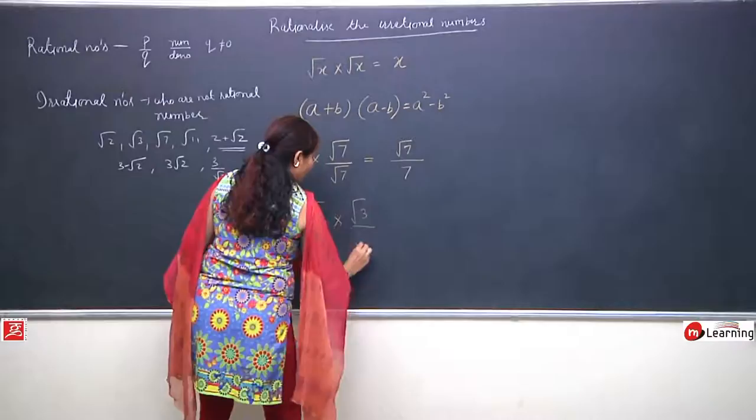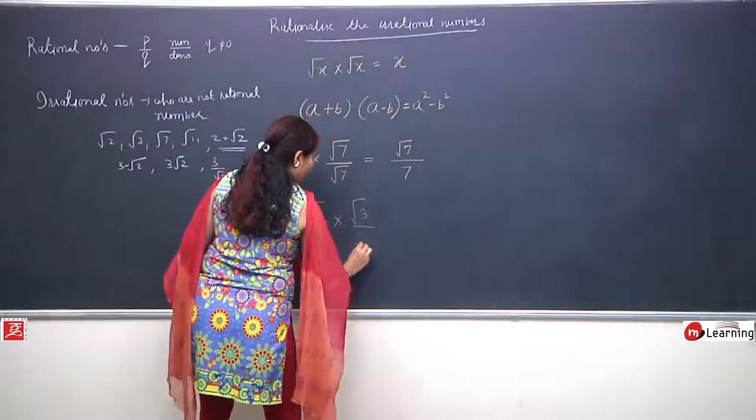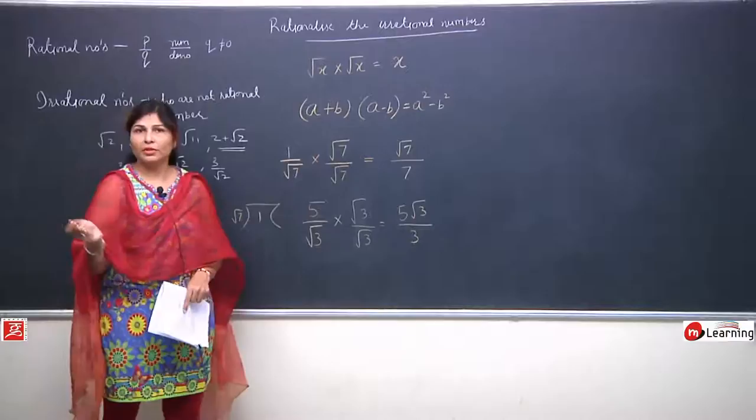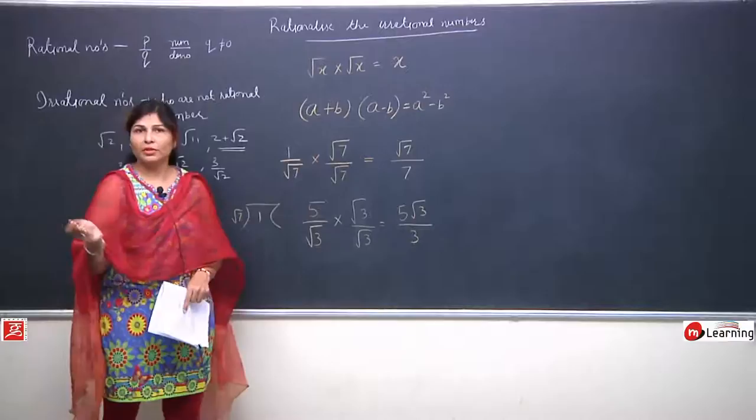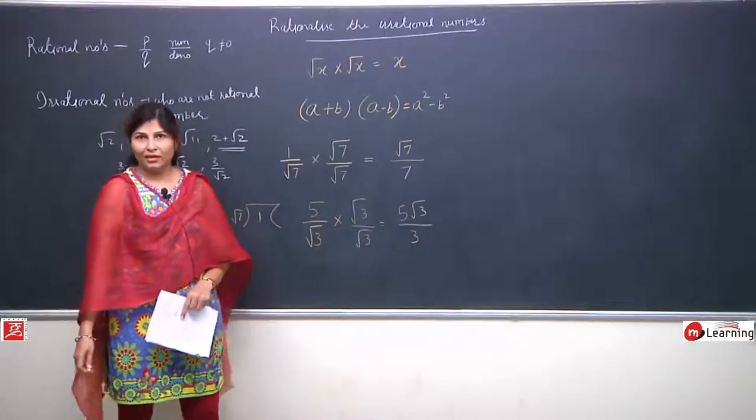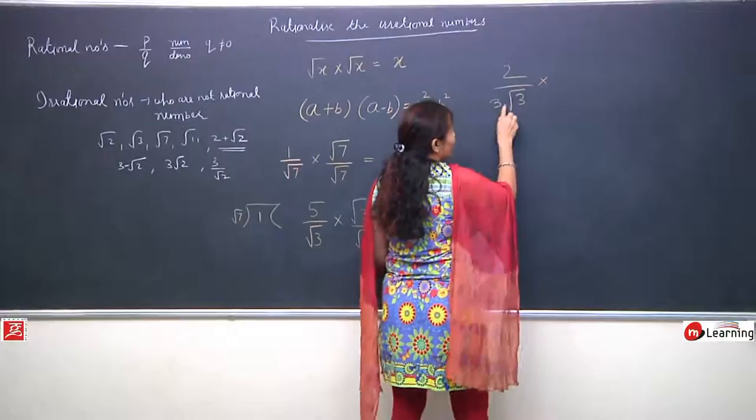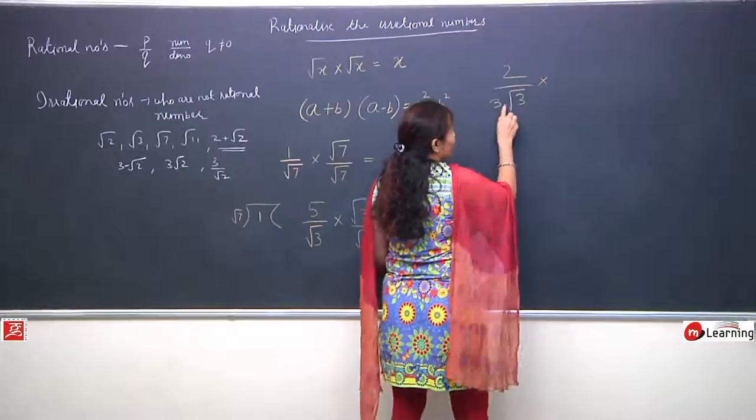Then what will we do? Multiply by root 3 and divide by root 3. So we get 5 root 3 upon 3. Suppose we are given the value of root 3, like 1.7 something. Then we multiply 5 by that value and divide by 3. Another question: I have 2 root 3 upon root 3.